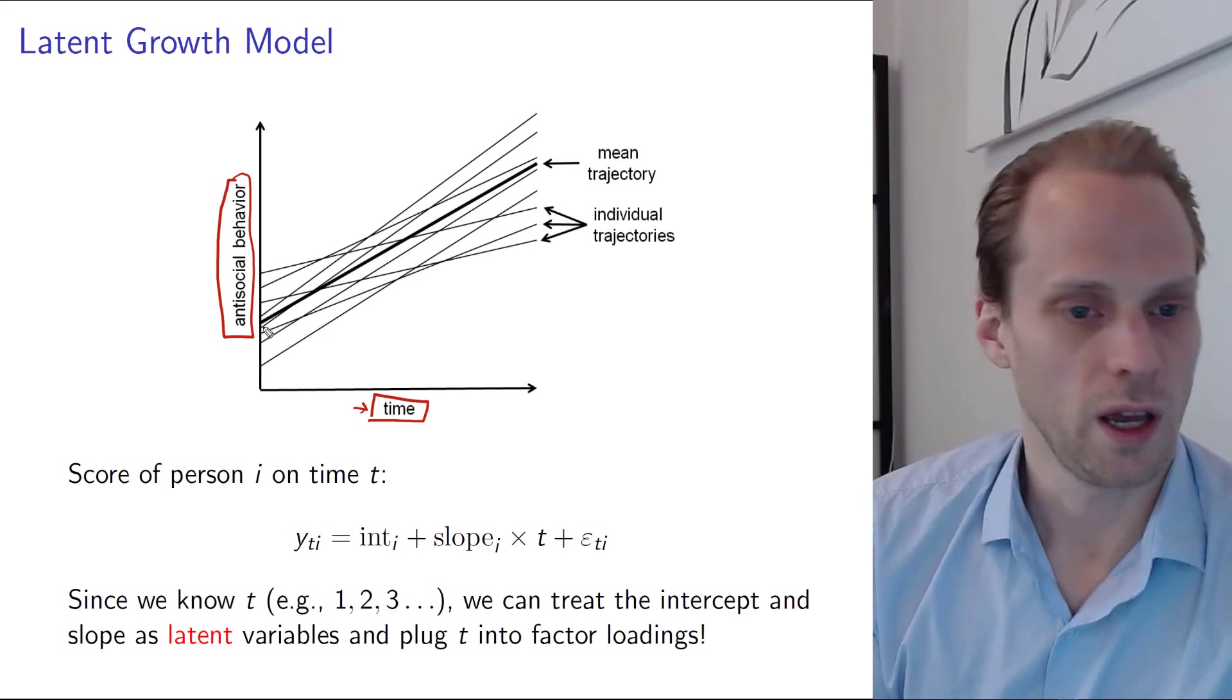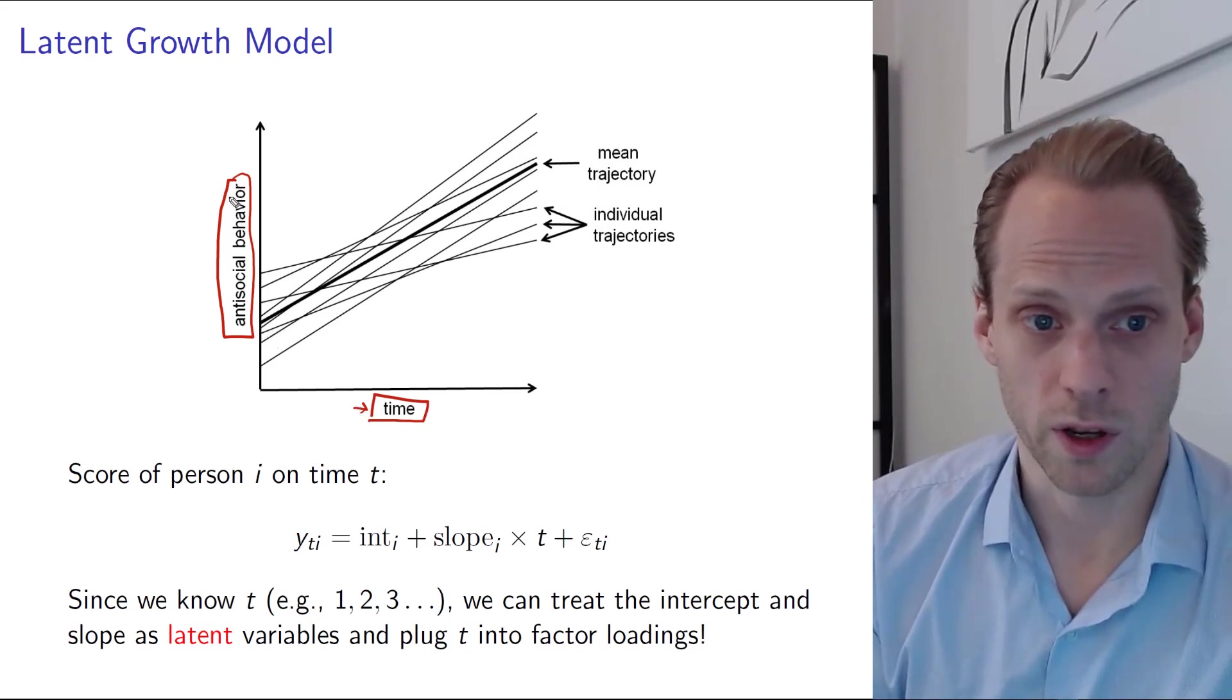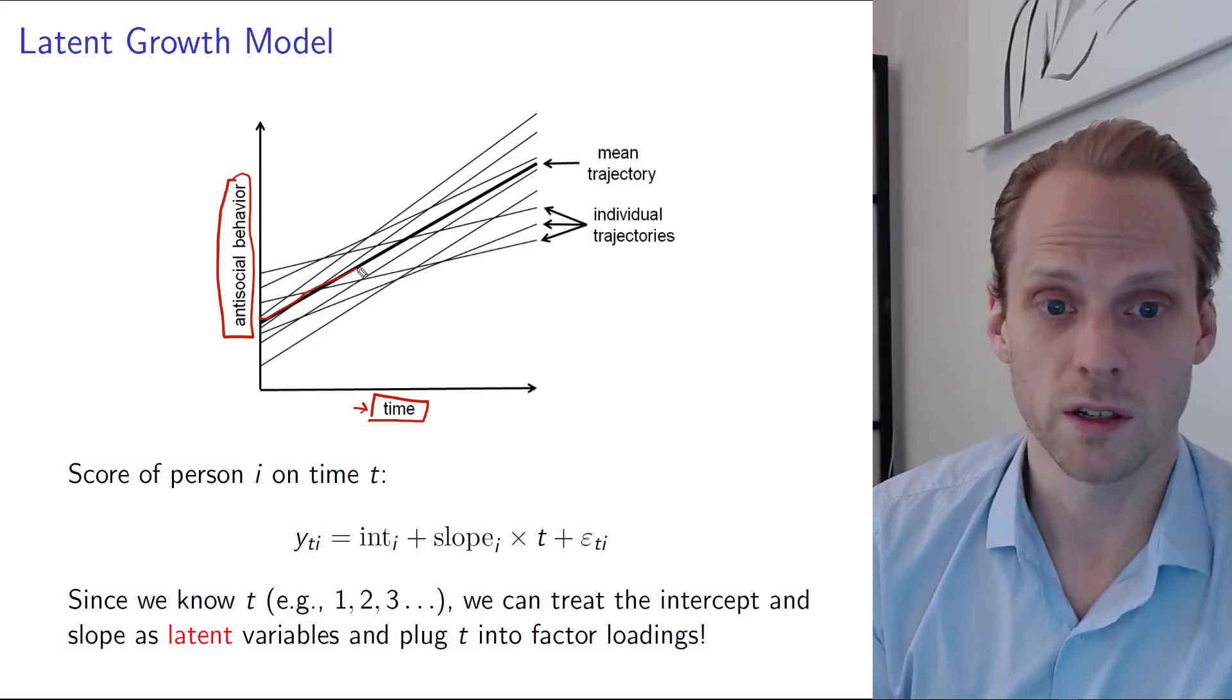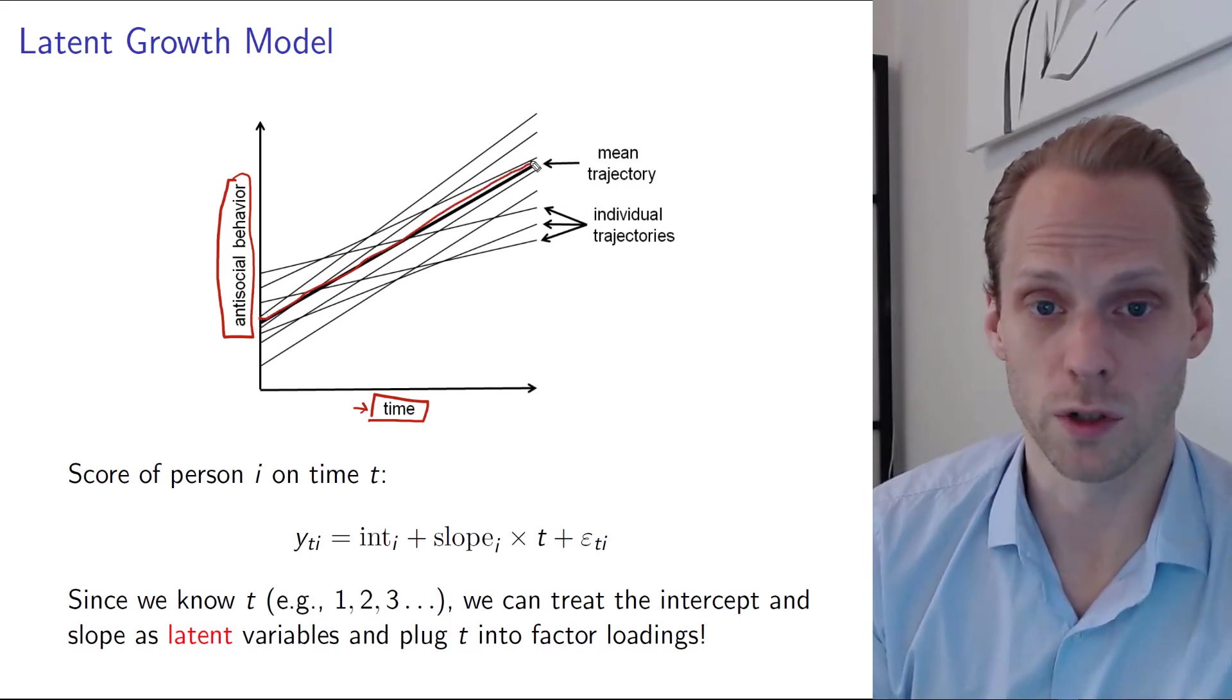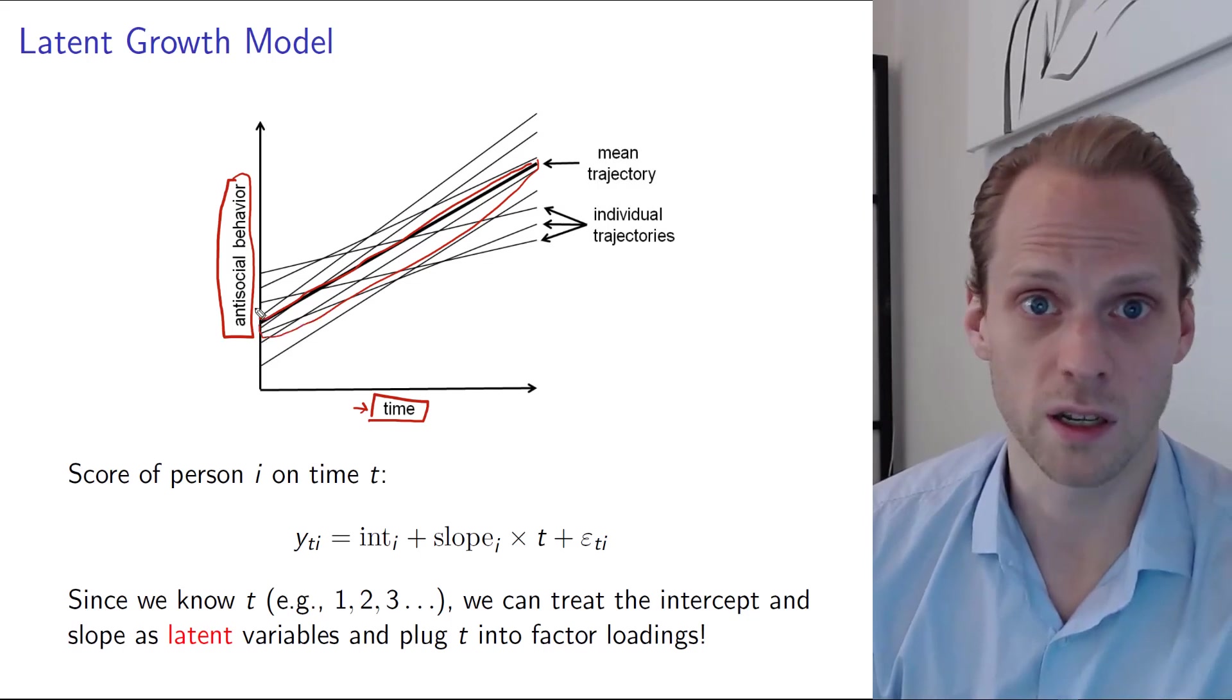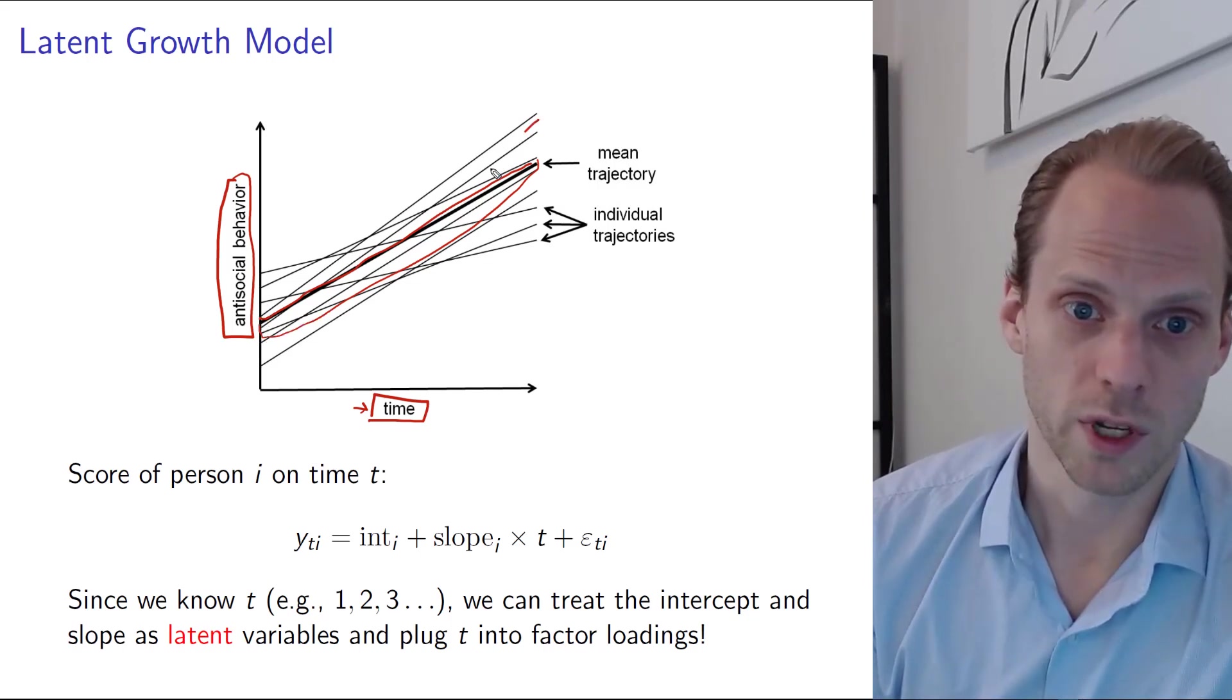So here we have an effect of time on antisocial behavior, we can have a mean trend. This is like the average growth of the average person, the fixed effect in multi-level modeling.